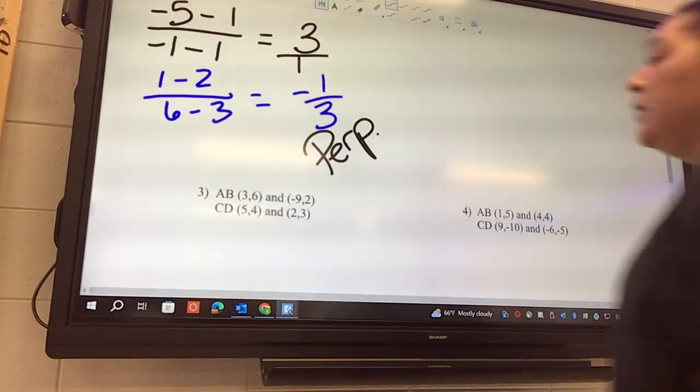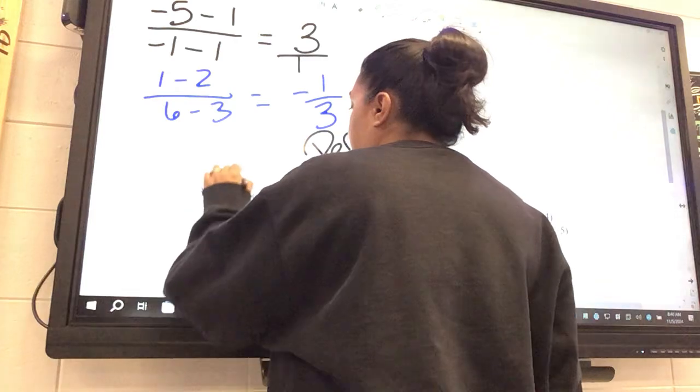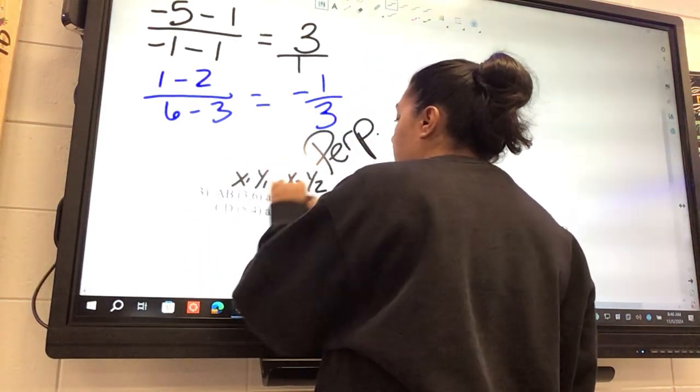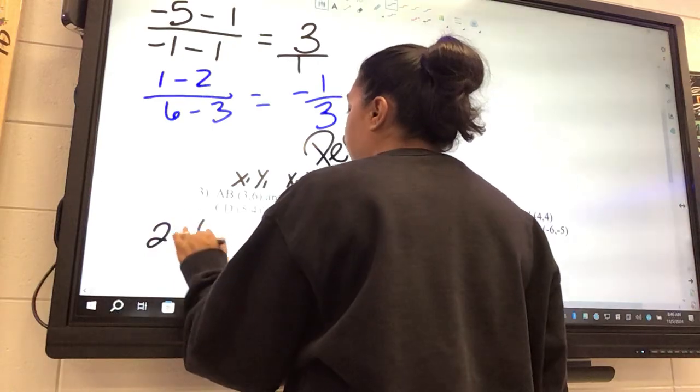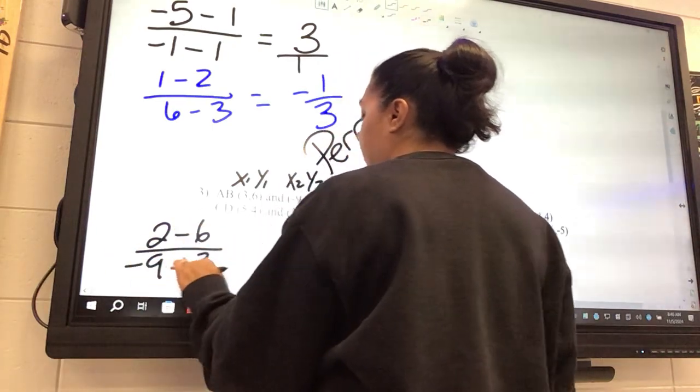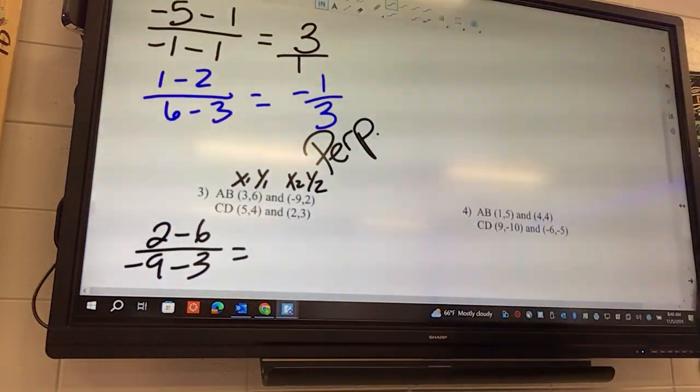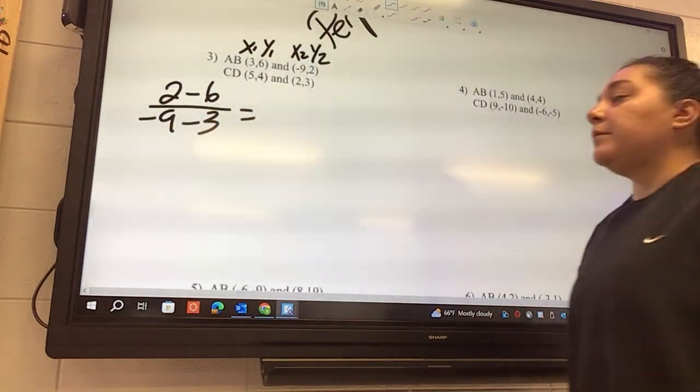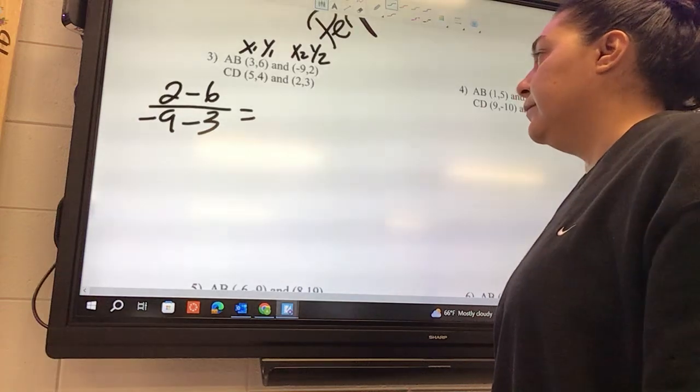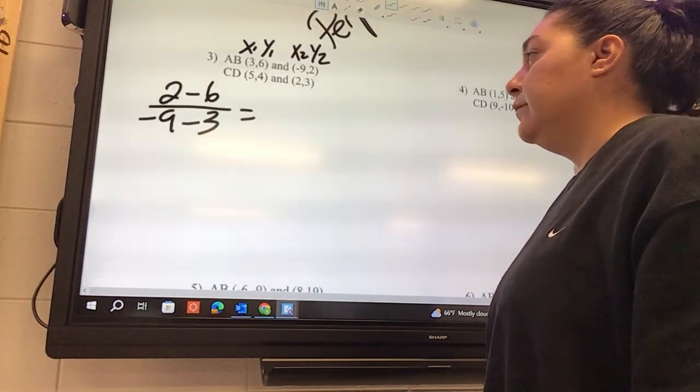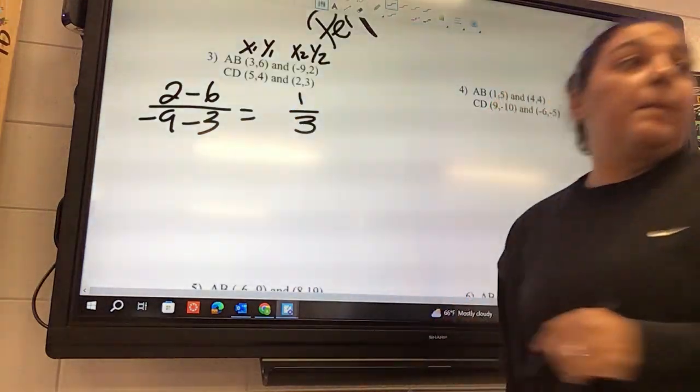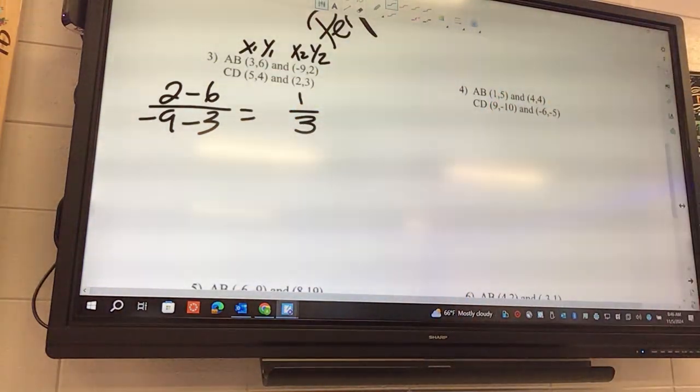Okay, so if I look at number 3, it's going to look like x1, y1, x2, y2. So 2 minus 6 over negative 9 minus 3. 1 over 3. 1 over 3. Somebody agree? Yes? No?